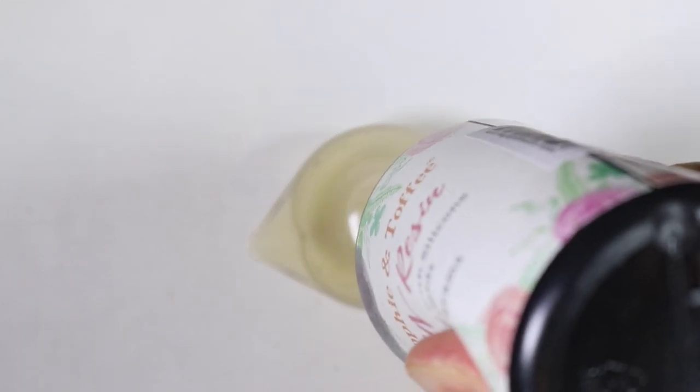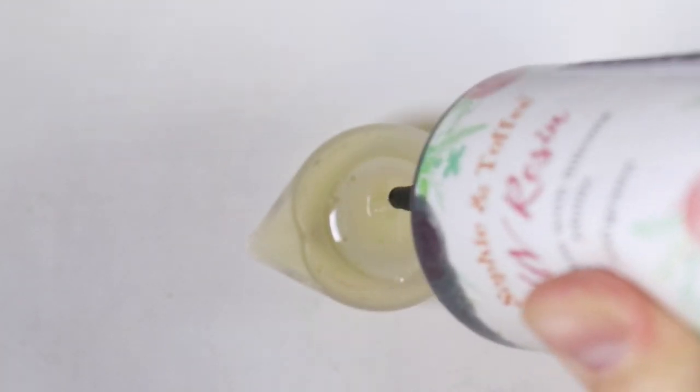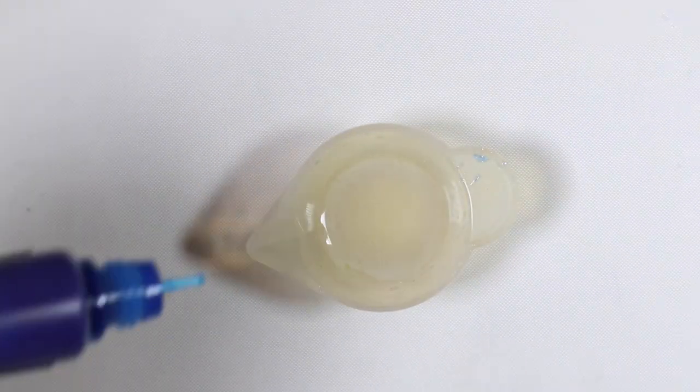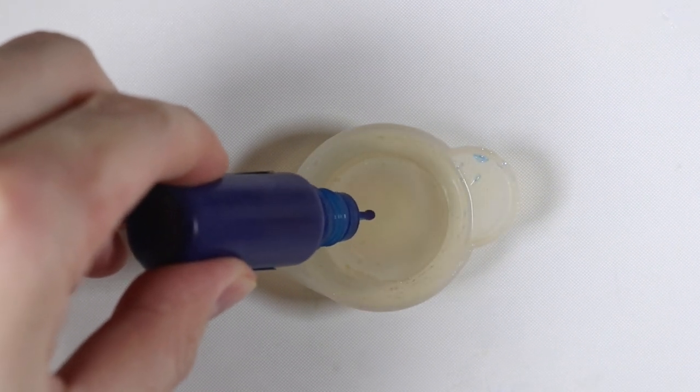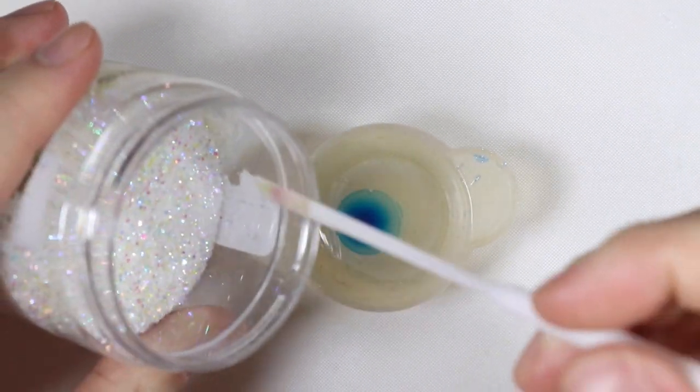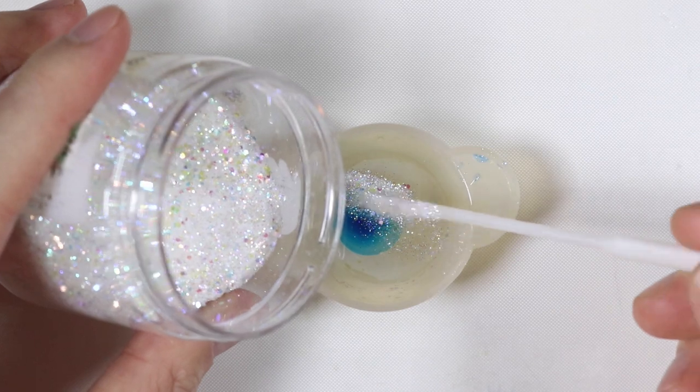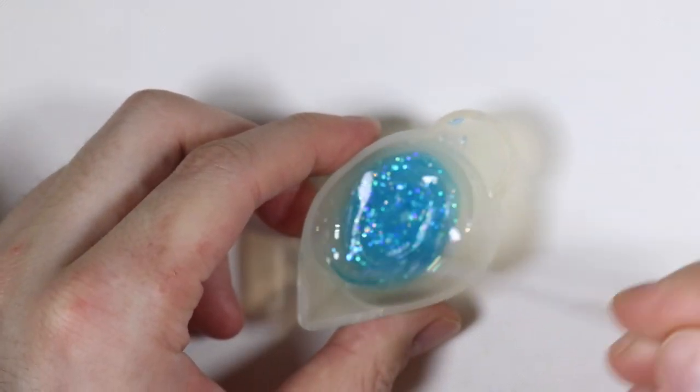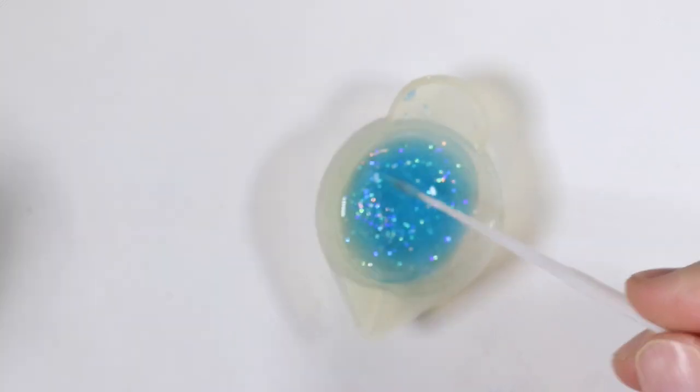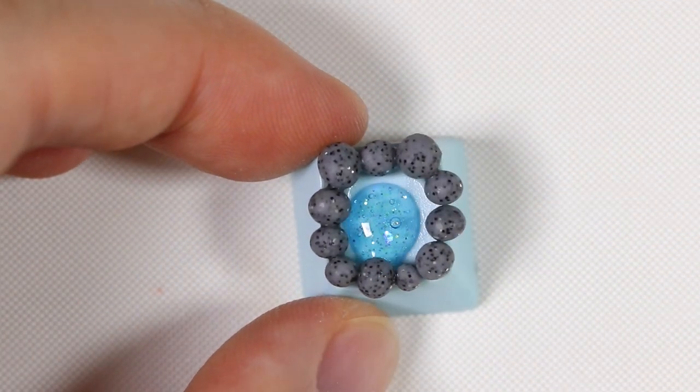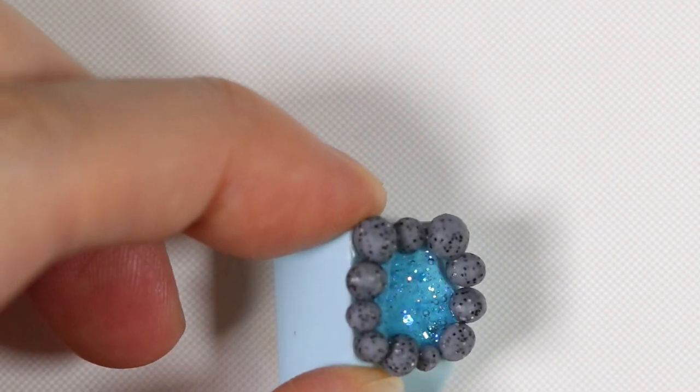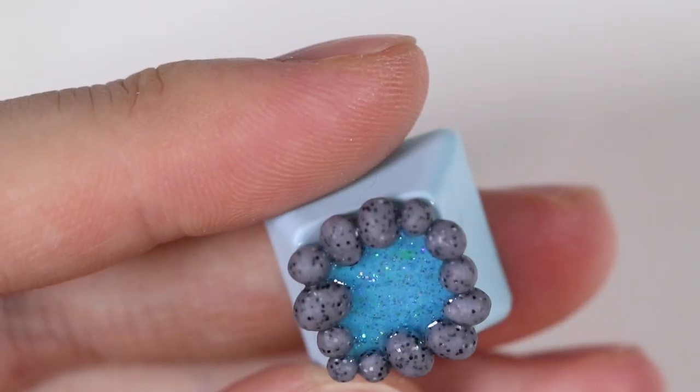Next, we're going to add some resin into our project. So I'm adding some light blue pigment and some glitter into some UV resin. And mixing it all together. Next, I'm going to put a layer of the blue resin into the hot spring and let that cure after one layer.